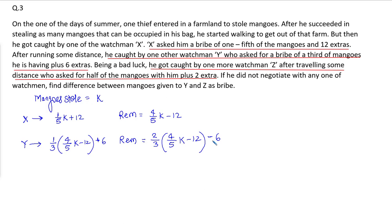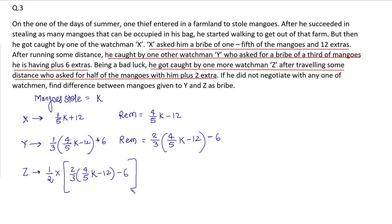Now for watchman Z: he receives half of the remaining mangoes. So that is half of [two-thirds of (4/5 k minus 12) minus 6], plus 2 mangoes extra. These many mangoes are given to watchman Z. How many are remaining after this is not required for now.